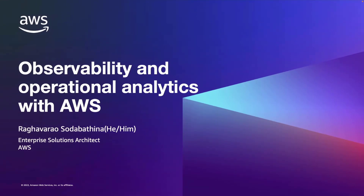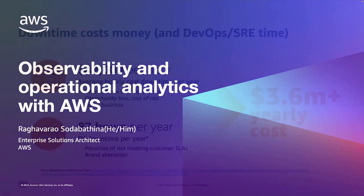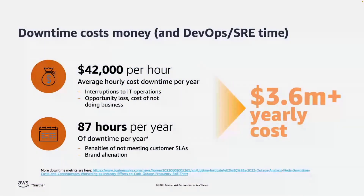The objective of today's session is to understand what is observability and how to build observability data pipelines on AWS by using Amazon OpenSearch. Downtime matters and it will cost you real money. Downtime consumes an average $5,600 per minute and 238 minutes per day. In addition, the time to get started back after an interruption consumes another 84 minutes per day. It is just to showcase the business value you are going to lose because of downtime.